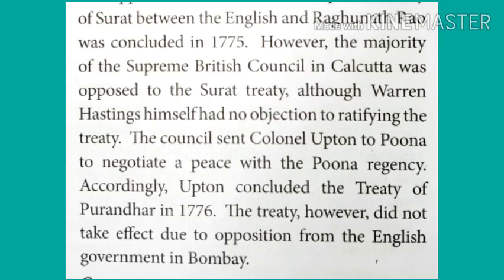However, the majority of the Supreme British Council in Calcutta was opposed to the Surat Treaty. Although Warren Hastings himself had no objections to ratifying the treaty, the council sent Colonel Upton to Pune to negotiate a peace with the Pune Regency. Accordingly, Upton concluded the Treaty of Purandar in 1776. The treaty, however, did not take effect due to opposition from the English government in Bombay.